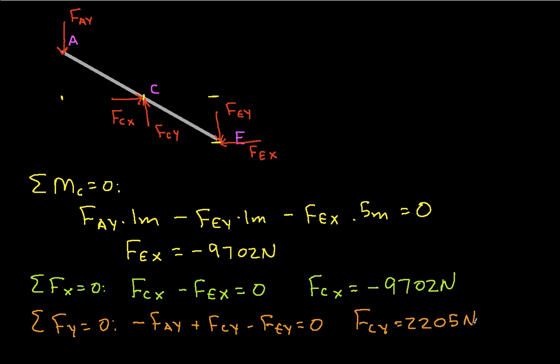So there we have it. We've solved for all of the reaction forces in the frame against the board. In conclusion, the reason why we had to use three different free body diagrams is that we didn't have any two-force elements. So we couldn't use the method that we had worked on with trusses. We actually had to look at the free body diagrams of the components.